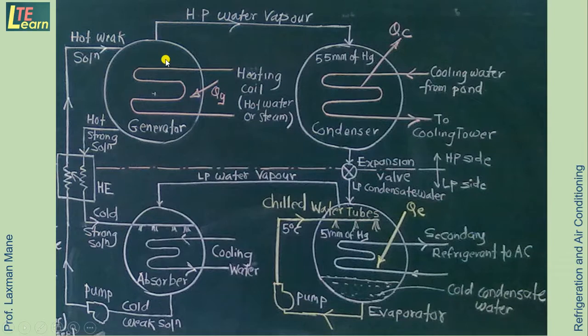So here in the generator it is heated. High pressure water vapor are separated which are sent to the condenser. After separation, the remaining Lithium Bromide plus some water, that is hot strong solution, is returning again to the absorber. In the generator, source of heat can be used as a heater, hot water or steam.